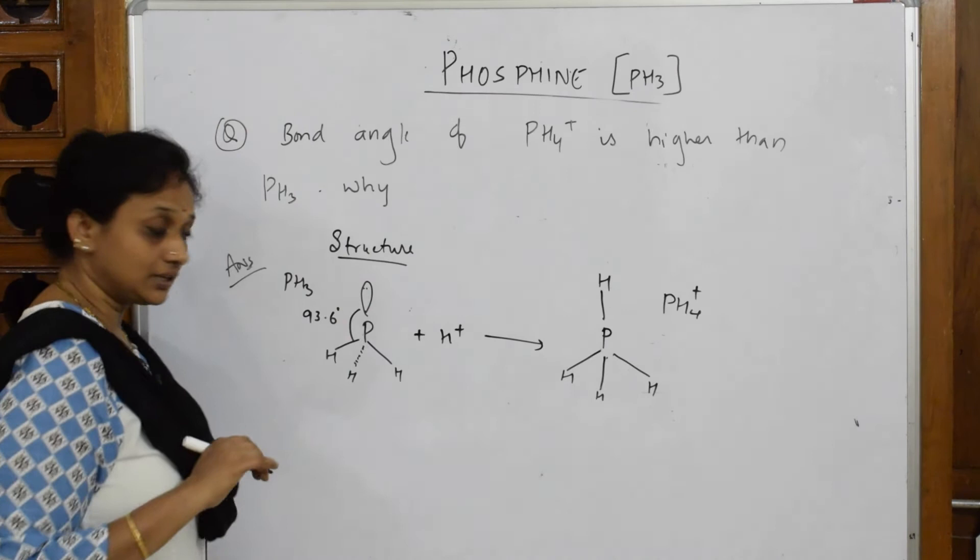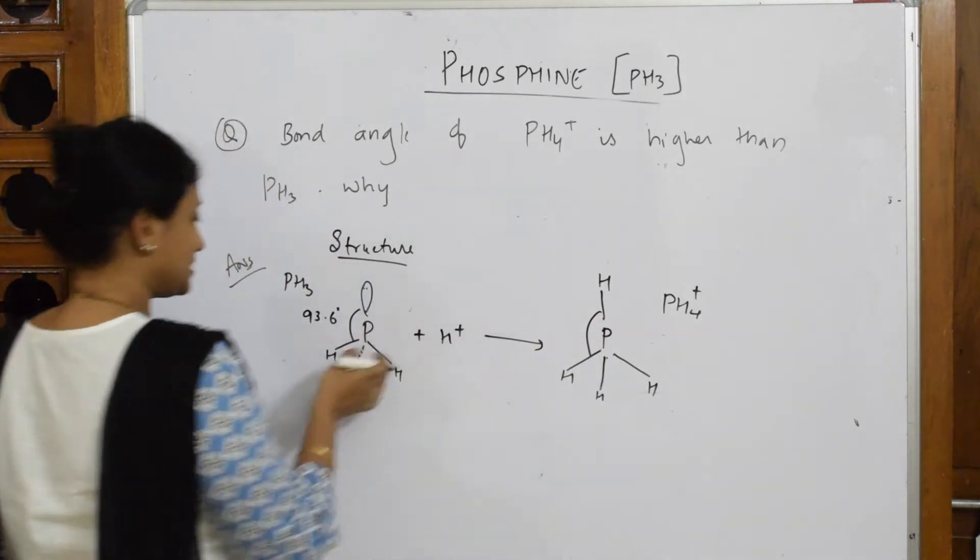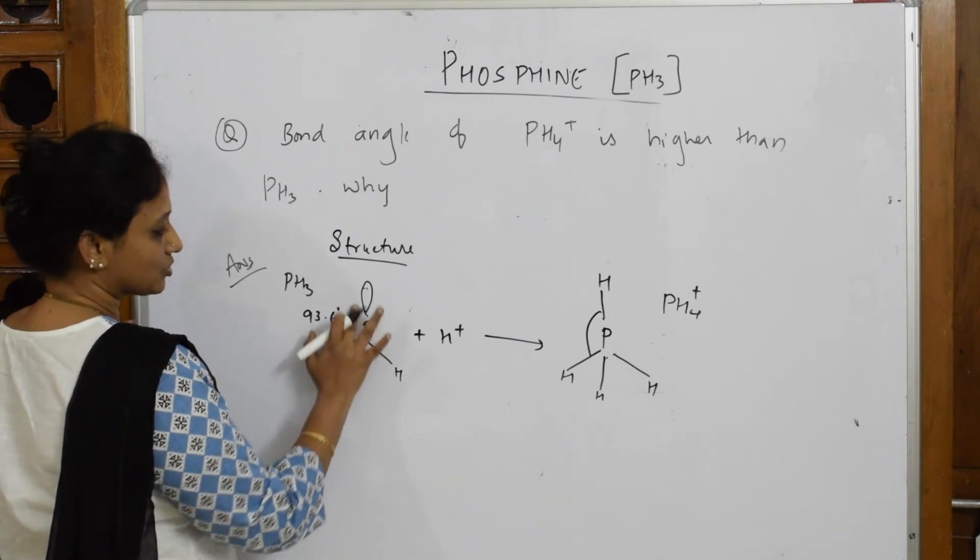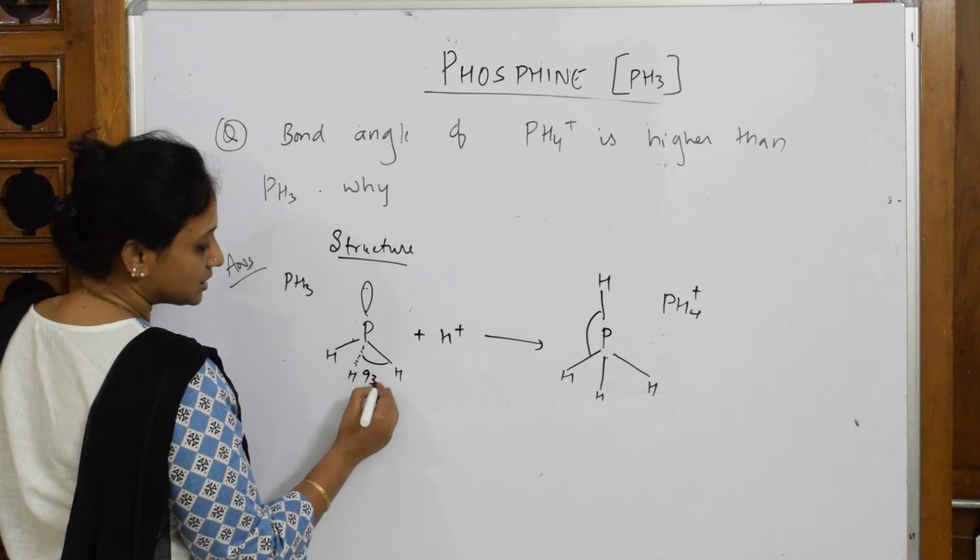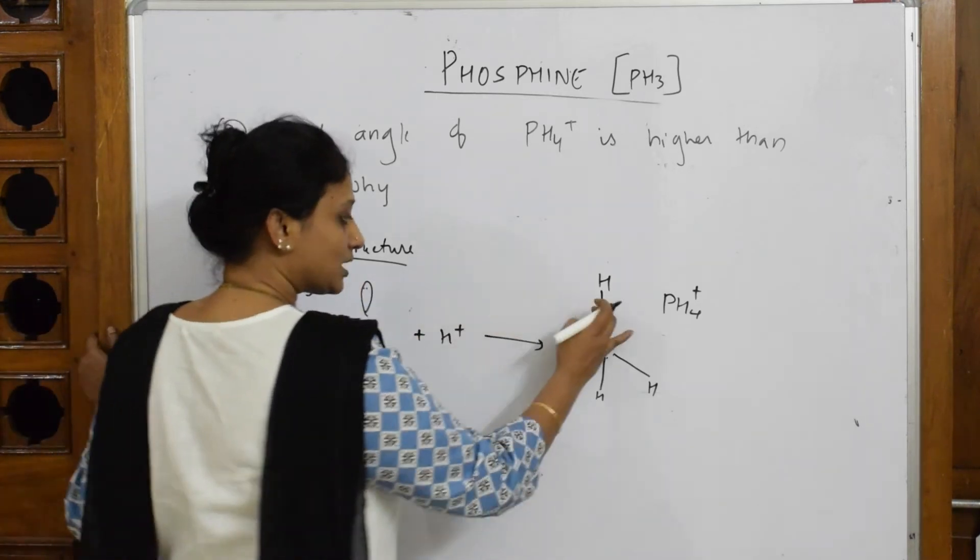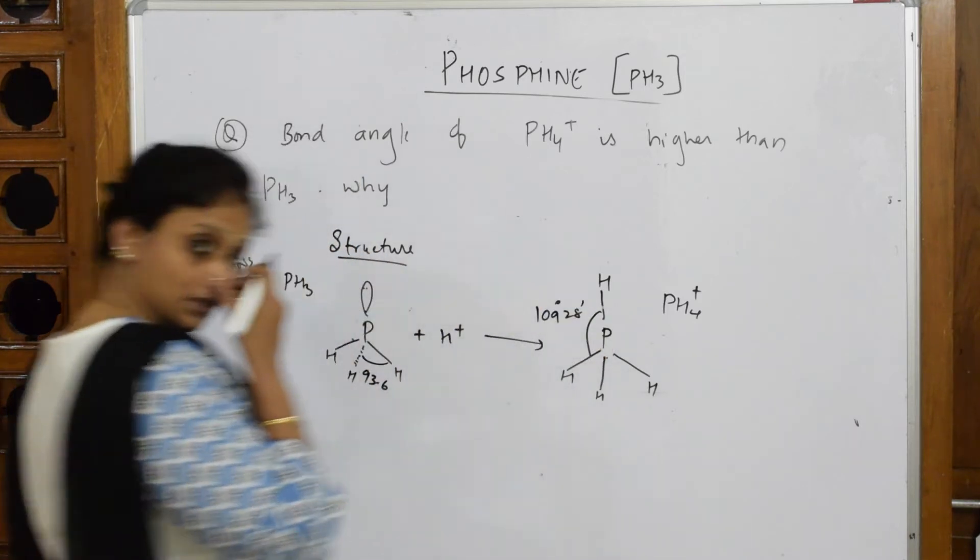Let us write here in this way. Because there is no lone pair here, I have to write between these two. The bond angle between these is 109 degrees 28 minutes.